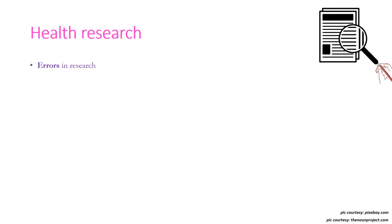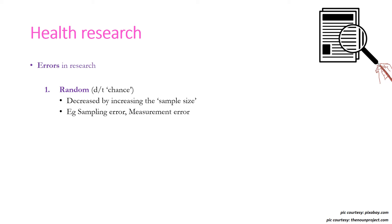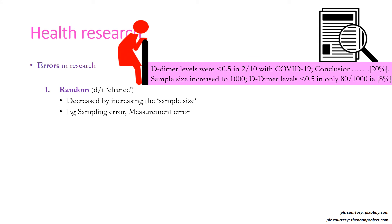There are two kinds of errors in research since no research can be completely devoid of errors. The first is random error, which occurs by chance — we do not intentionally introduce it. It can be decreased by increasing the sample size; examples include sampling error and measurement error. For instance, if we study D-dimer levels in 10 COVID-19 patients and find 20% normal, but increase the sample to 1000 and find only 8% normal, the larger sample makes results more reliable, generalizable, and applicable to the broader population.